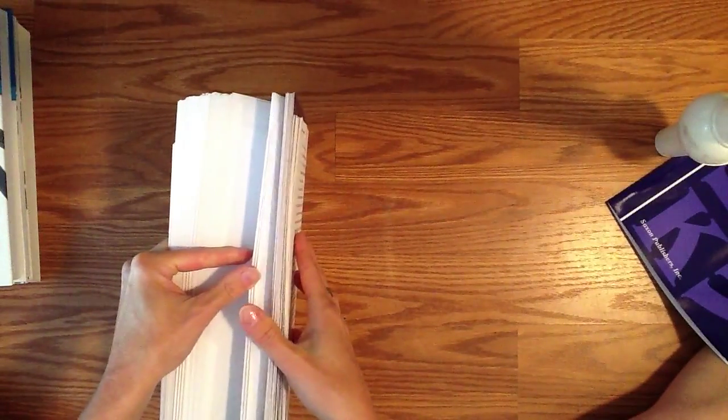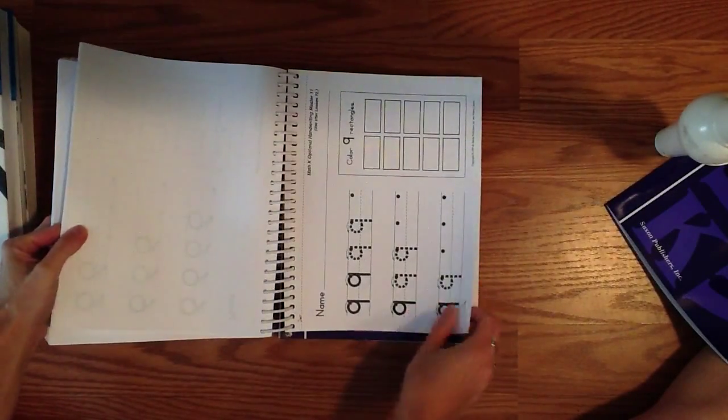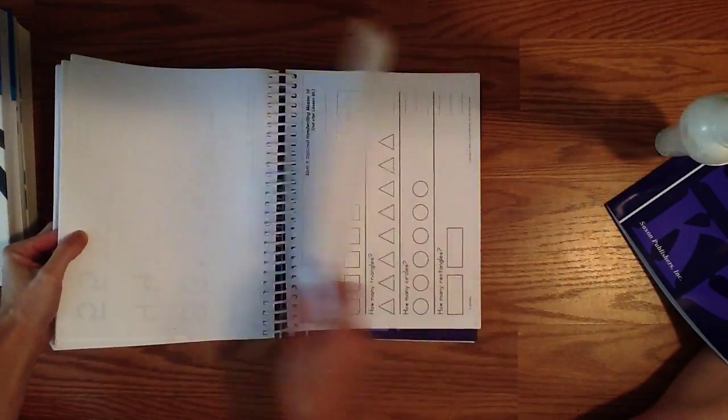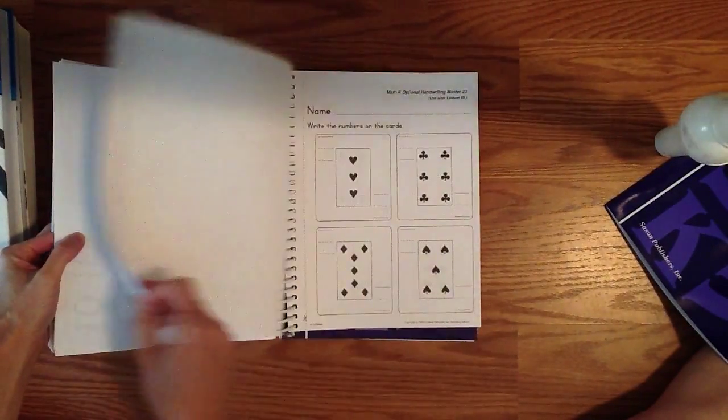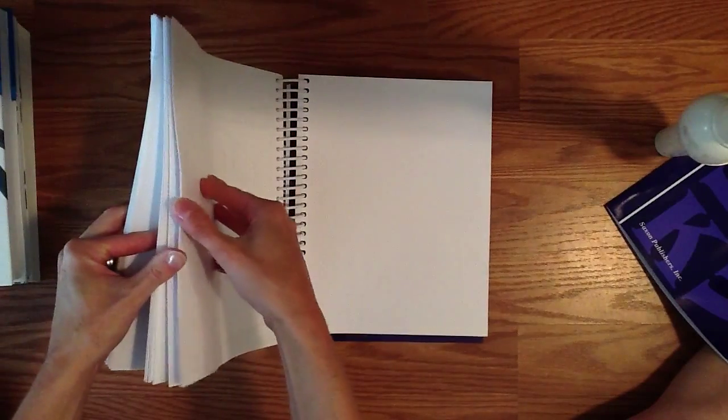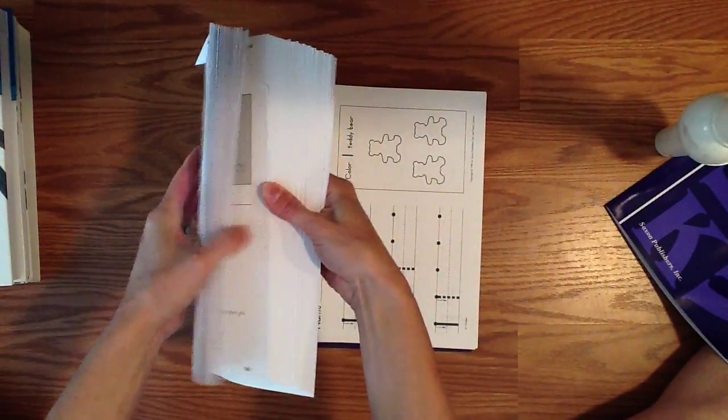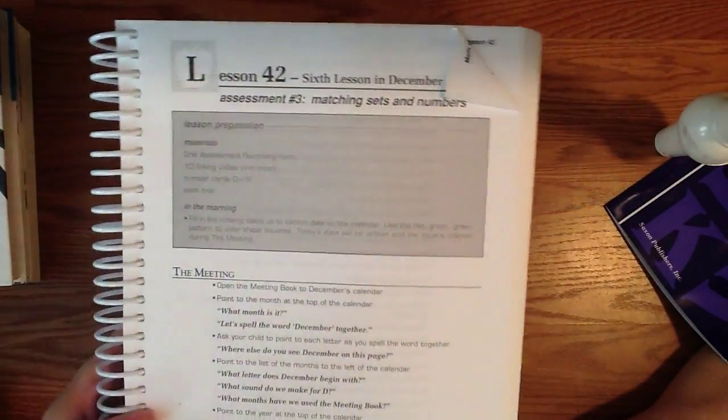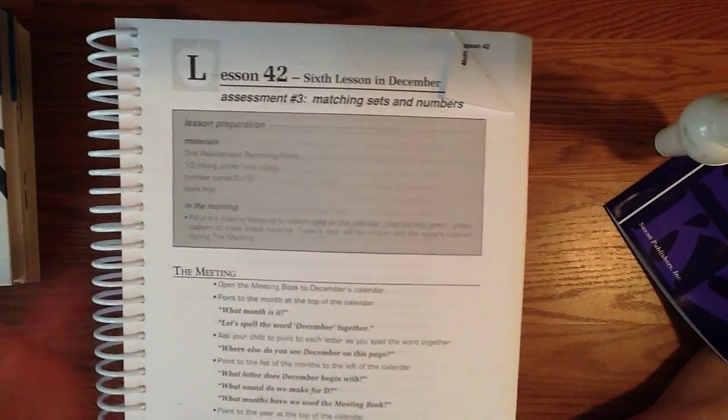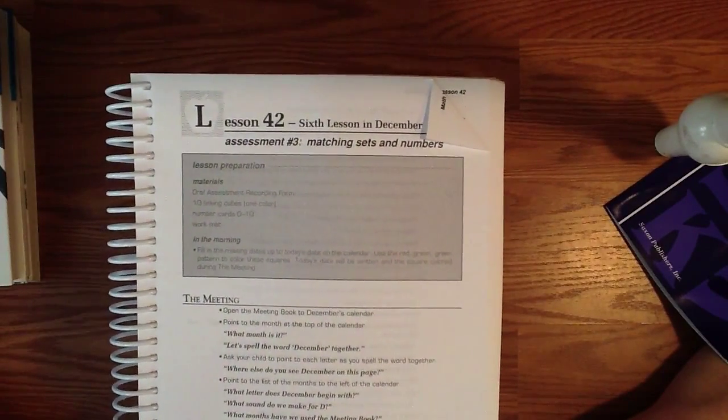You'll also find at the back of the book some different writing worksheets where you're working on number writing, and I would strongly encourage using these. Any type of writing that they're doing is just going to benefit them for the future. Here's some pattern work, so different worksheets kind of towards the end here of your teacher guide. And then lastly, you'll see also when they reference if it's time for an assessment, they'll reference it here at the top of the lesson. And like I said in the beginning, for kindergarten it's just an informal kind of oral discussion type of assessment.